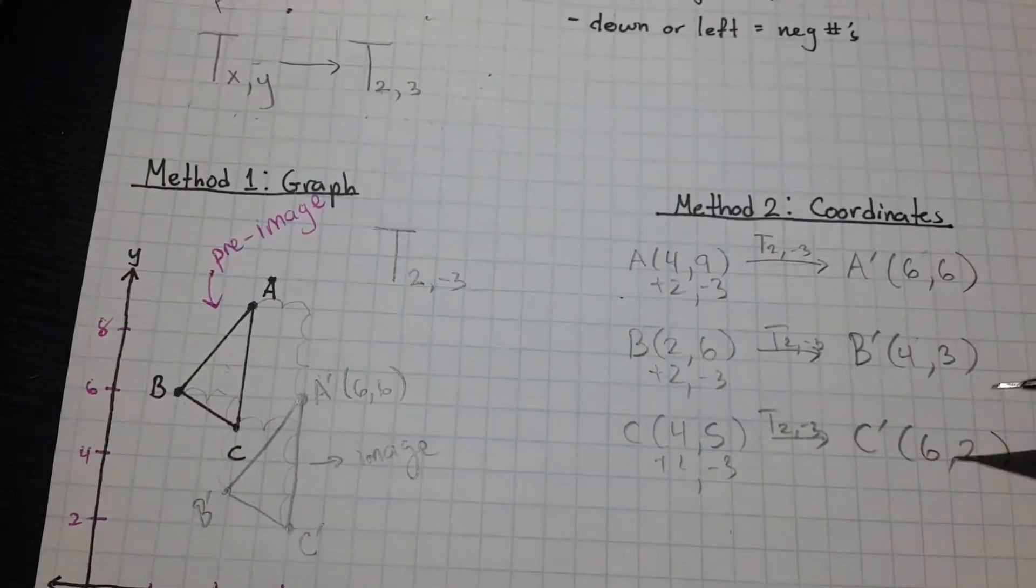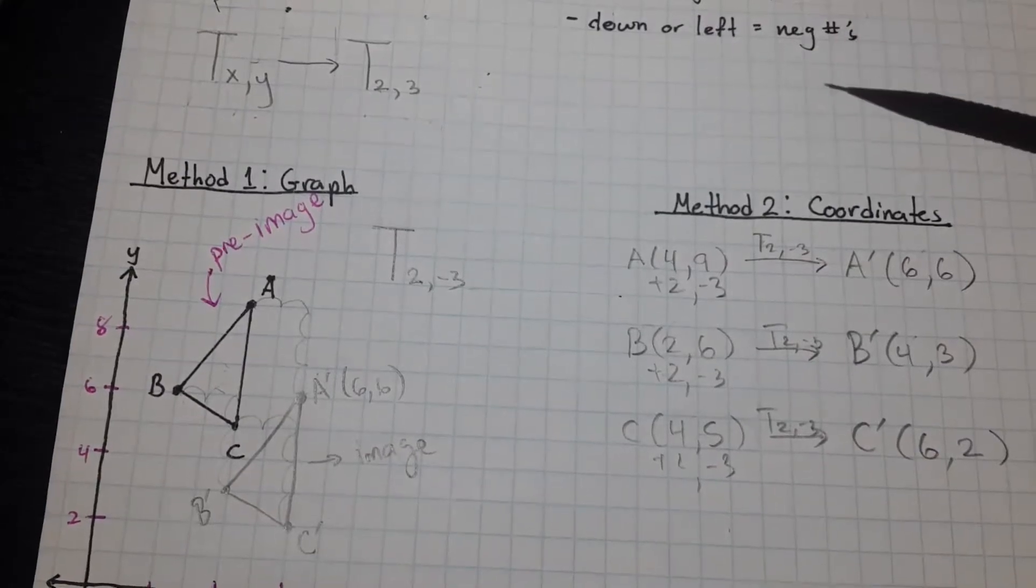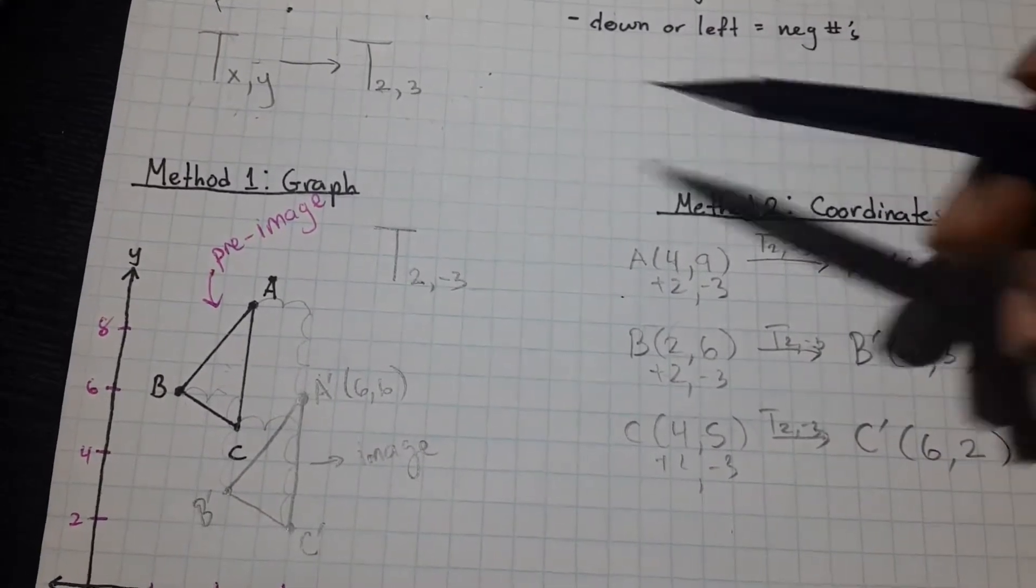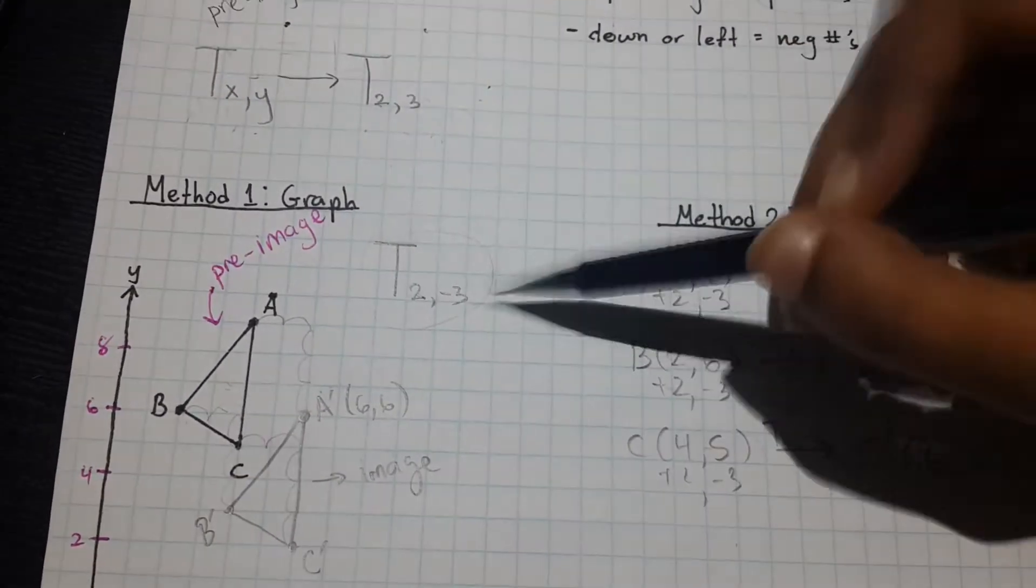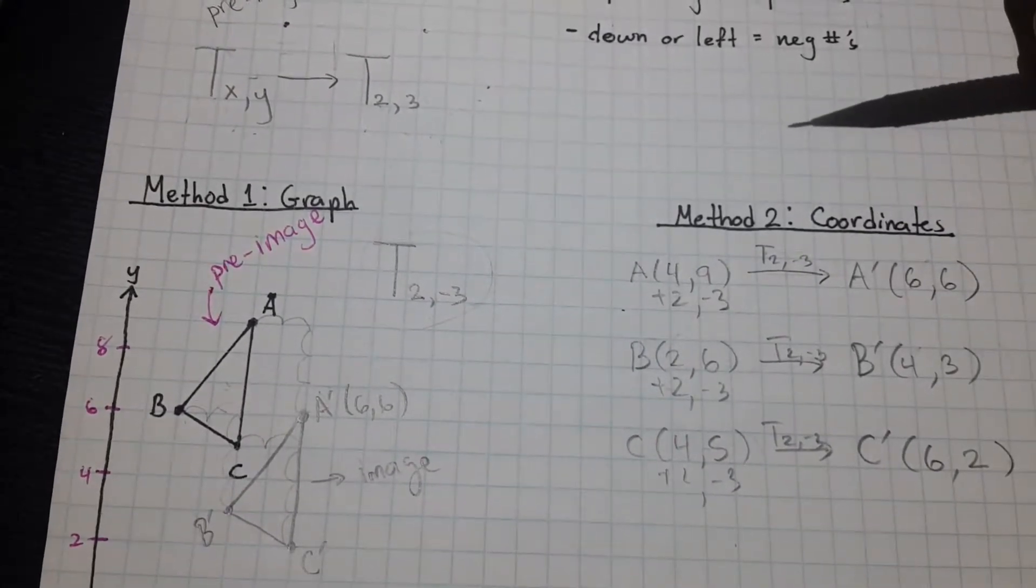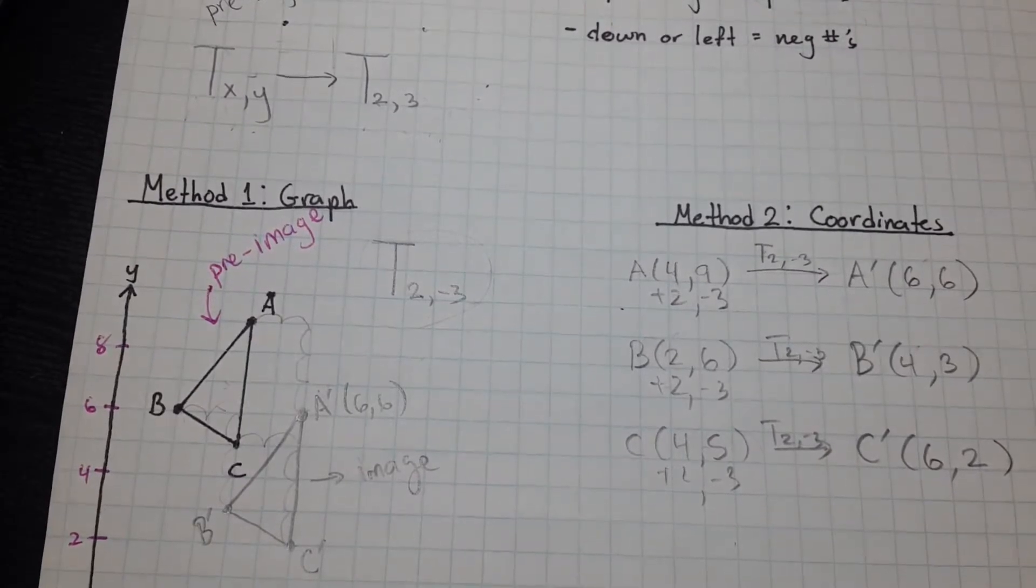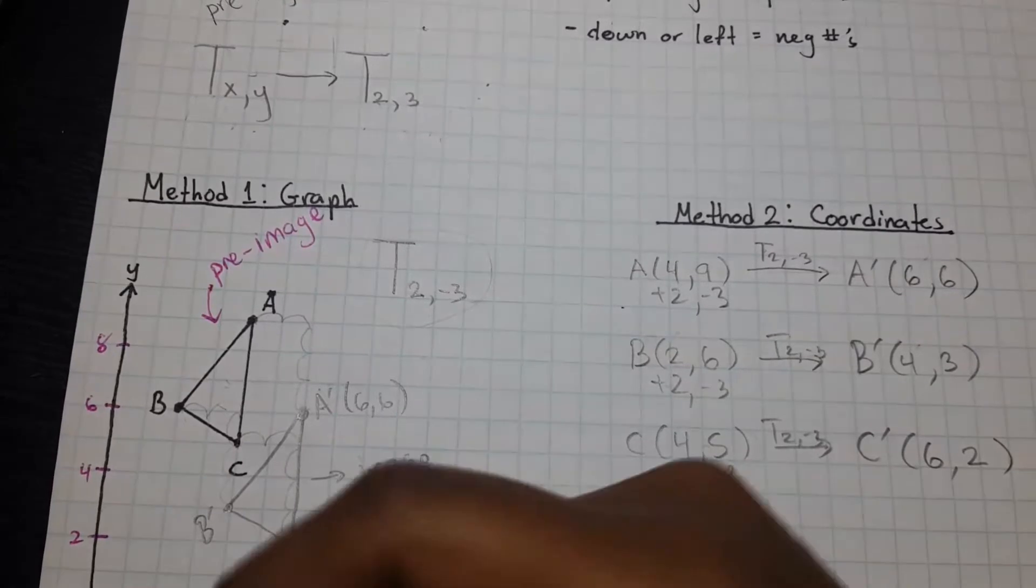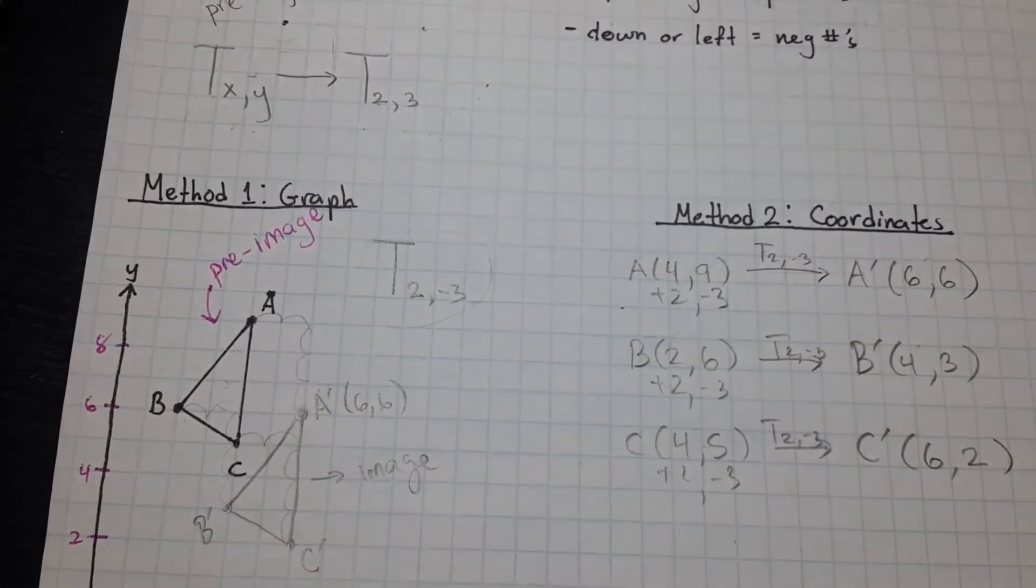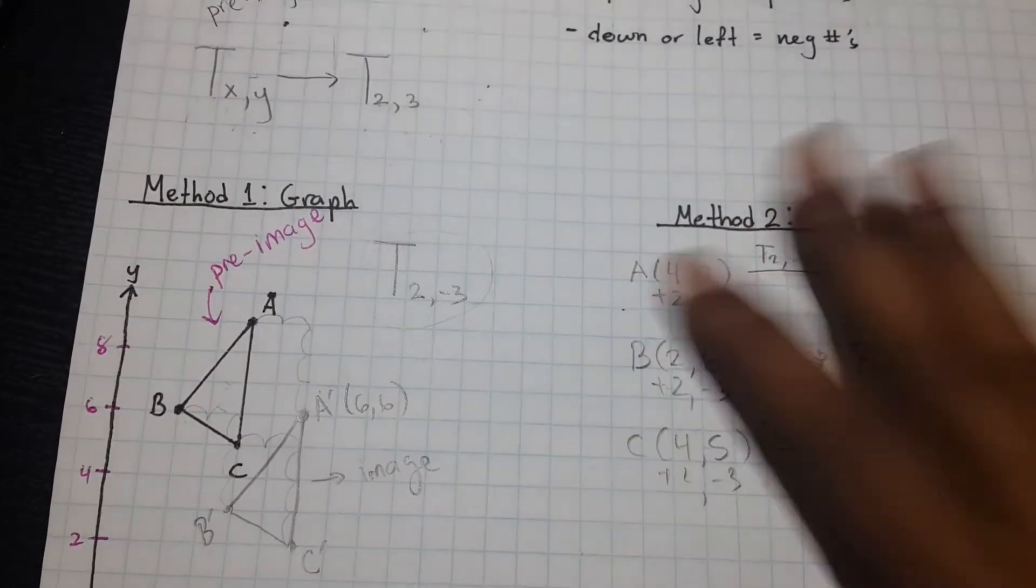So, this is pretty much it for translating points on a plane. What you should definitely practice is writing and recognizing the notation, because the Regents, if that's what you're taking, enjoys throwing multiple transformations at you. And they might use this specific notation. So, if you don't recognize the notation, you're automatically in a bad position.